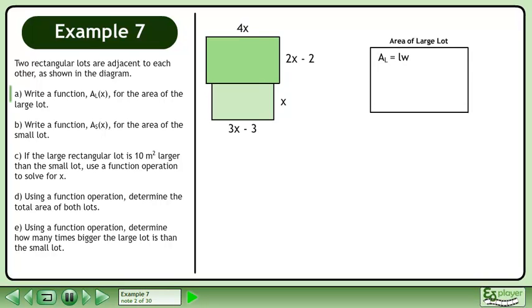The area of a rectangle is length times width. The length of the large rectangle is 4x and the width is 2x-2. Multiply to get 8x²-8x. This is an algebraic expression representing the area of the large rectangle.